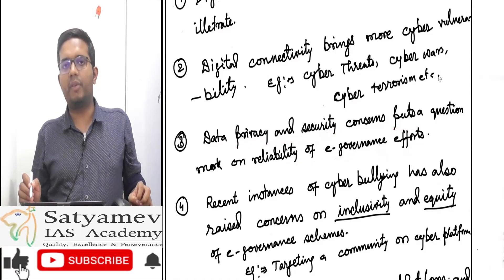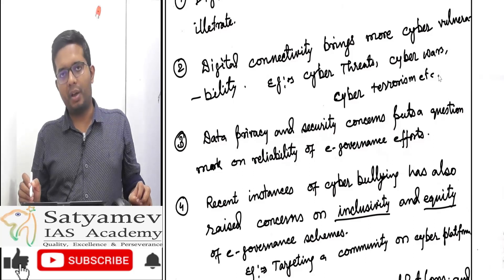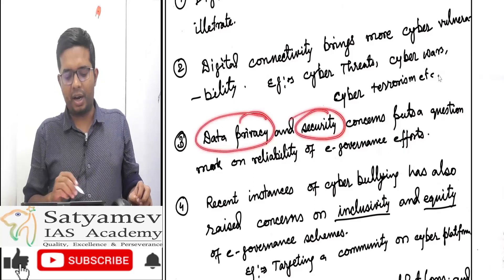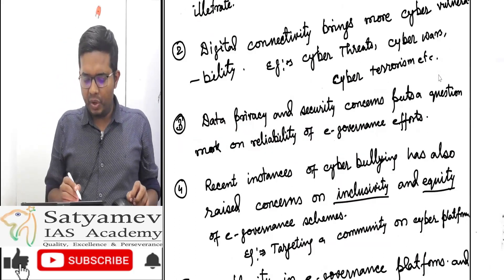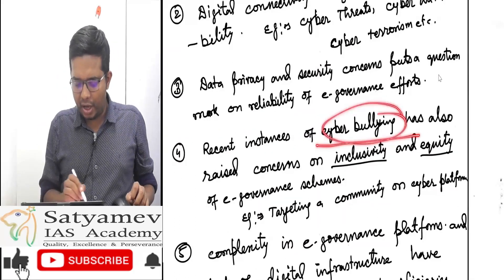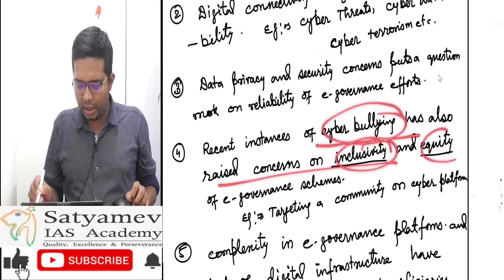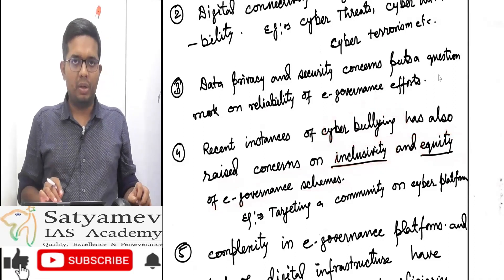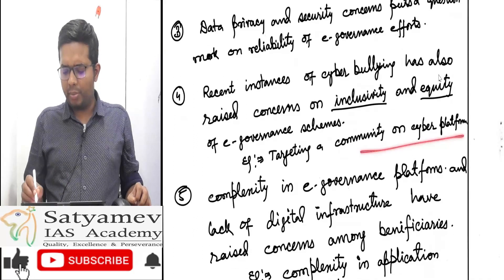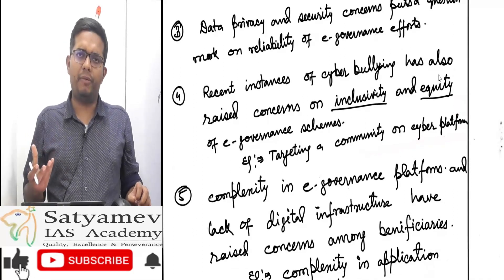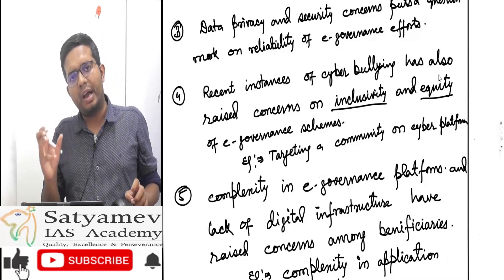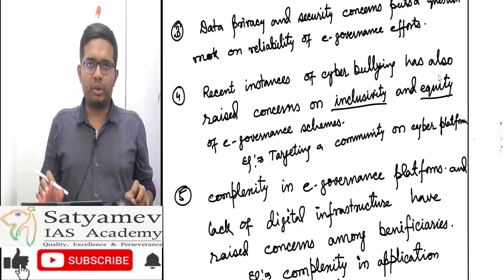Digital privacy and security concerns put a question mark on the reliability of e-governance efforts. Recent incidents of cyber bullying have also raised concerns of inclusivity and equity in e-governance schemes. For example, targeting a particular community on cyber platforms is happening very frequently — some communities are being alienated from the government.